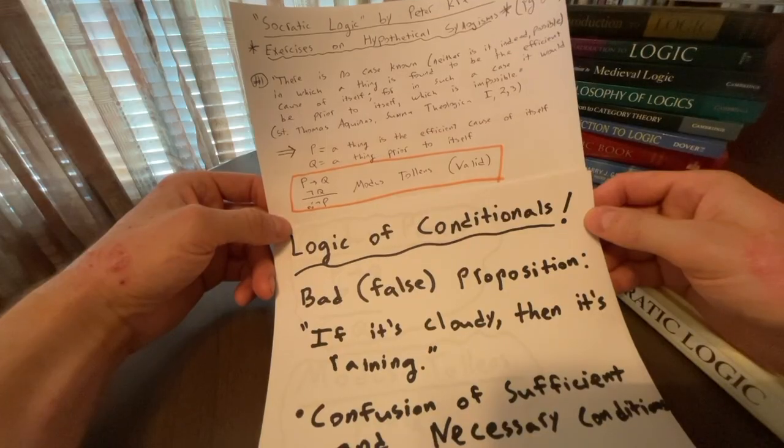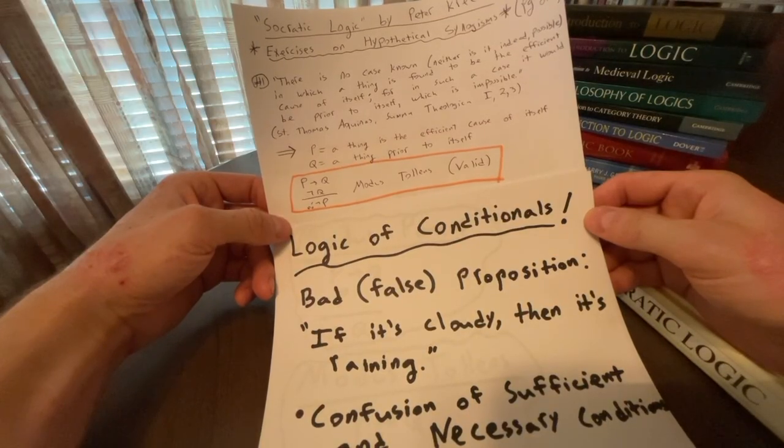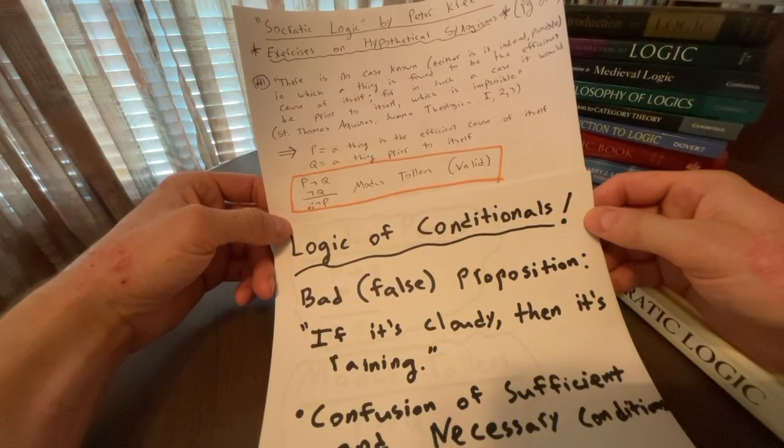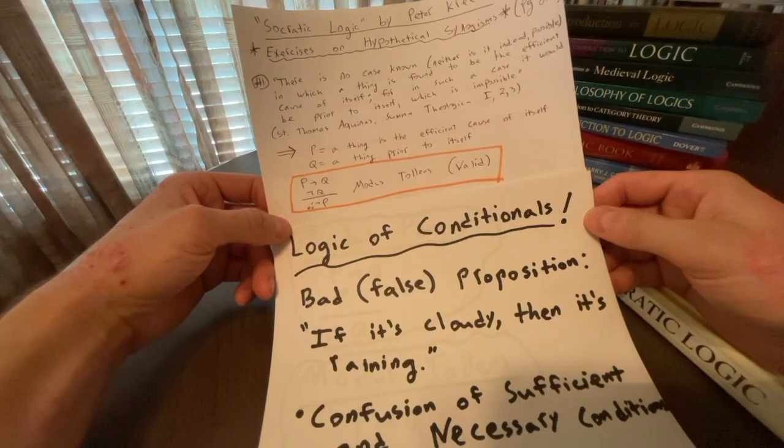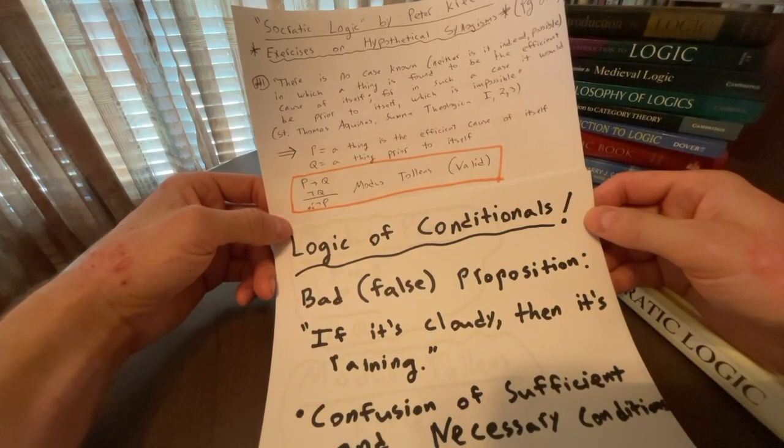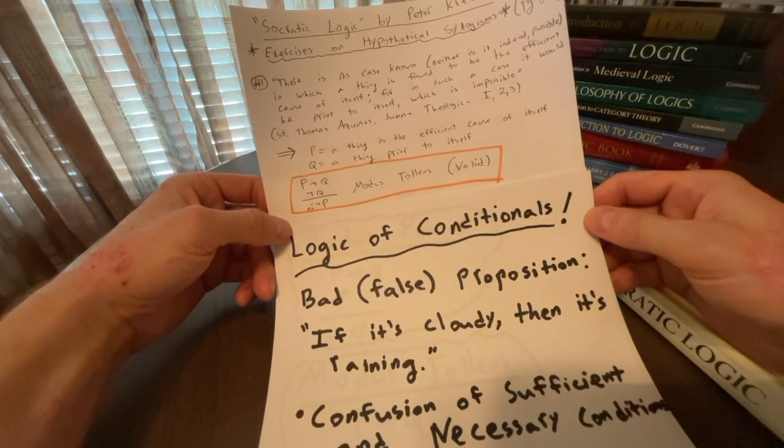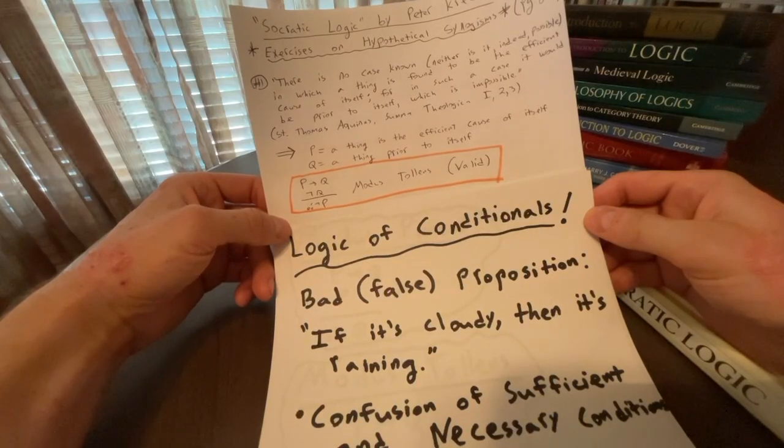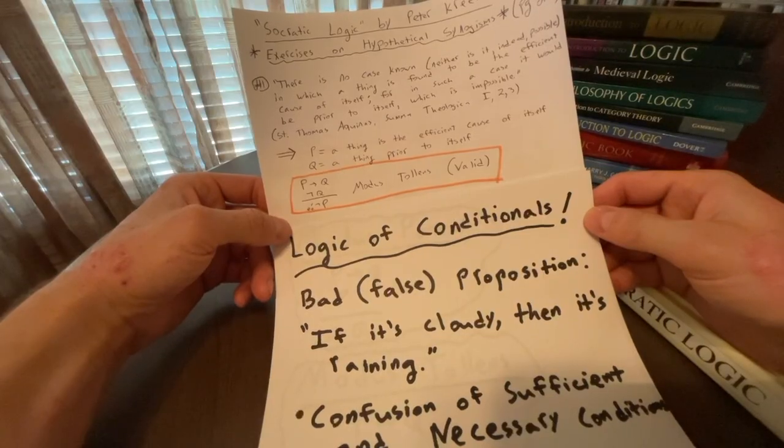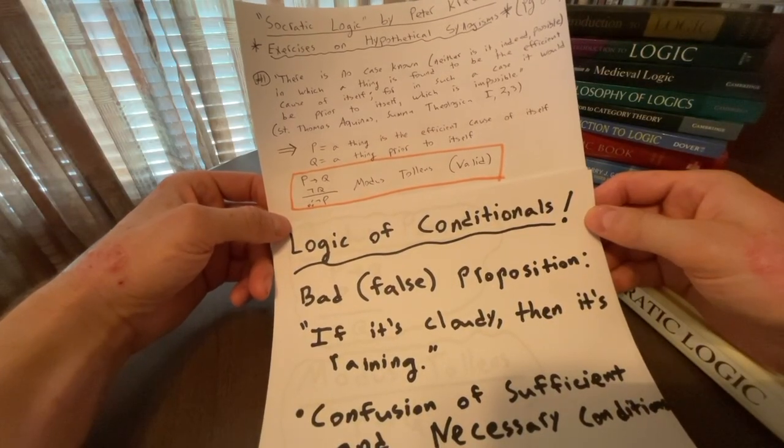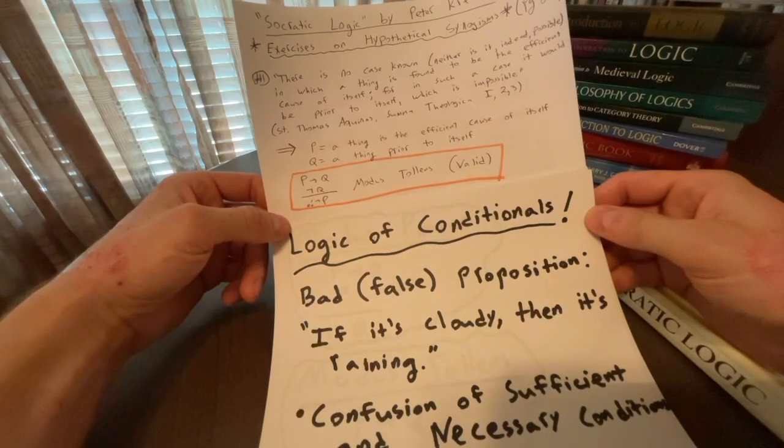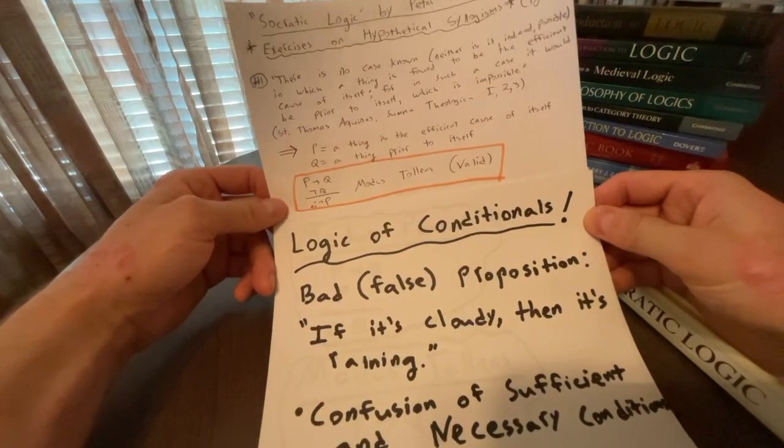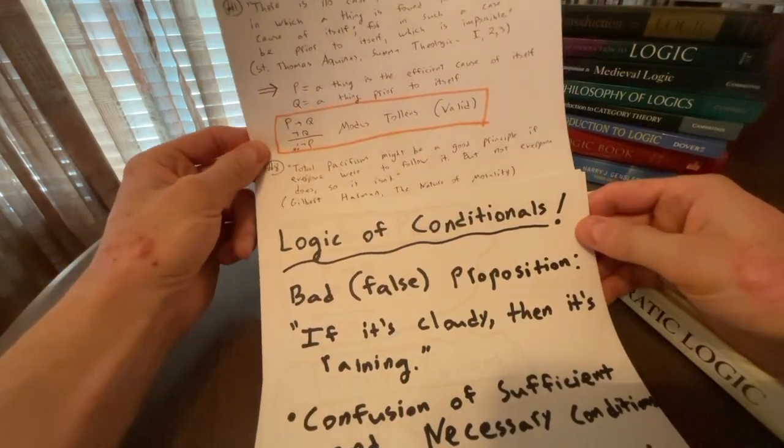In other words, if a thing is the efficient cause of itself, then a thing is prior to itself, but a thing cannot be prior to itself, therefore a thing cannot be the efficient cause of itself. We have a modus tollens inference. And modus tollens is indeed valid. It's a valid structure or pattern of good argumentation. So we have a good, valid argument. Logic is a skill to spot arguments, to spot the forms of modus ponens and modus tollens in real day life, so to speak, in argumentation.